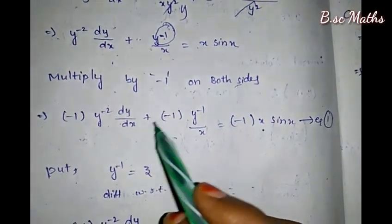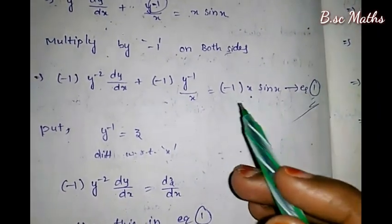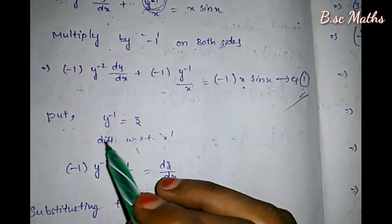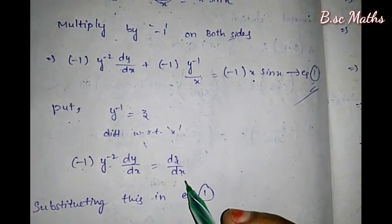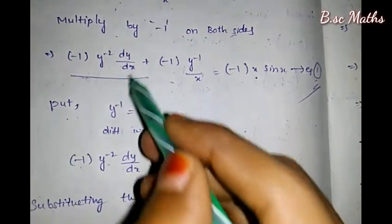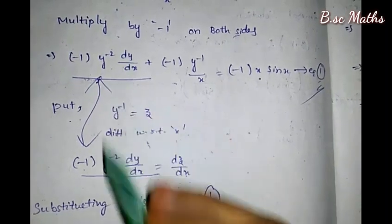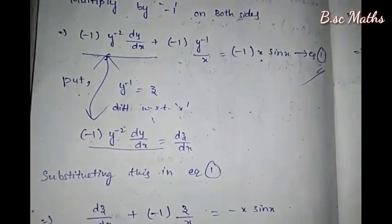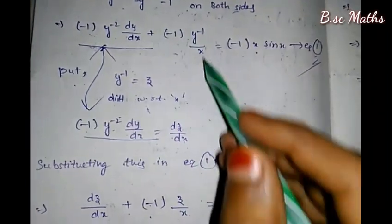We get minus 1 times y to the power minus 2 times dy/dx, plus minus 1 times y to the power minus 1 divided by x, equals minus x·sin(x). This is equation number 1. Now put y inverse equal to z, so differentiation with respect to x gives minus 1 times y⁻² times dy/dx equals dz/dx. Substituting these values into equation number 1.